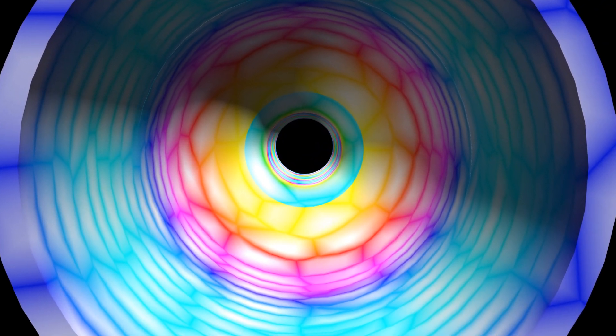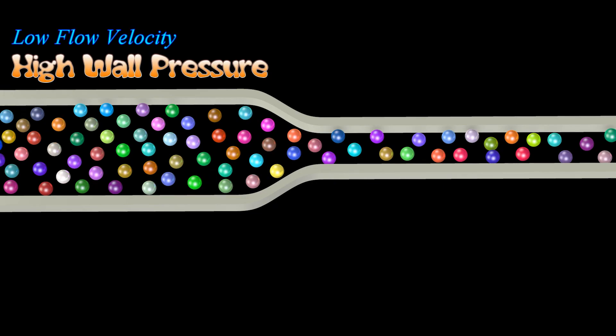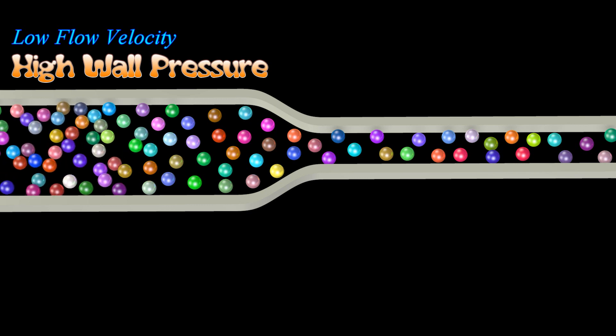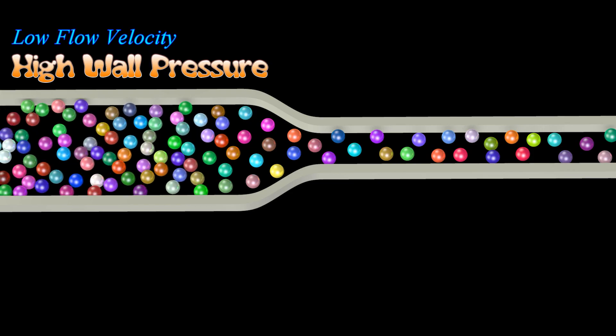Before we answer these questions, let us first review what Bernoulli's principle says about this example, and the highly unsatisfying explanation typically given for it. The fluid has approximately the same density everywhere throughout the pipe. Therefore, the total number of atoms per second flowing through each section of pipe will be the same. Since fewer atoms can fit in the narrow section of the pipe, the atoms must flow through the narrow section faster to keep the total flow constant.